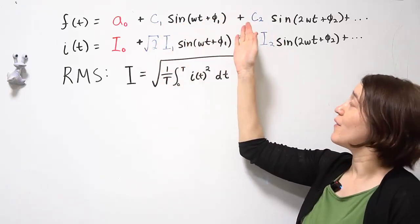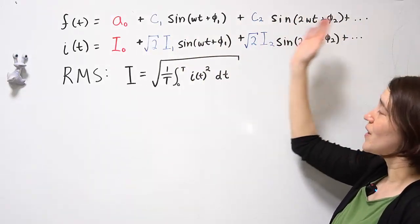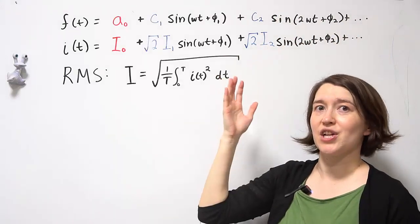And then we have up to infinity, n equals 2, n equals 3 to infinity. These are our higher order harmonic terms.